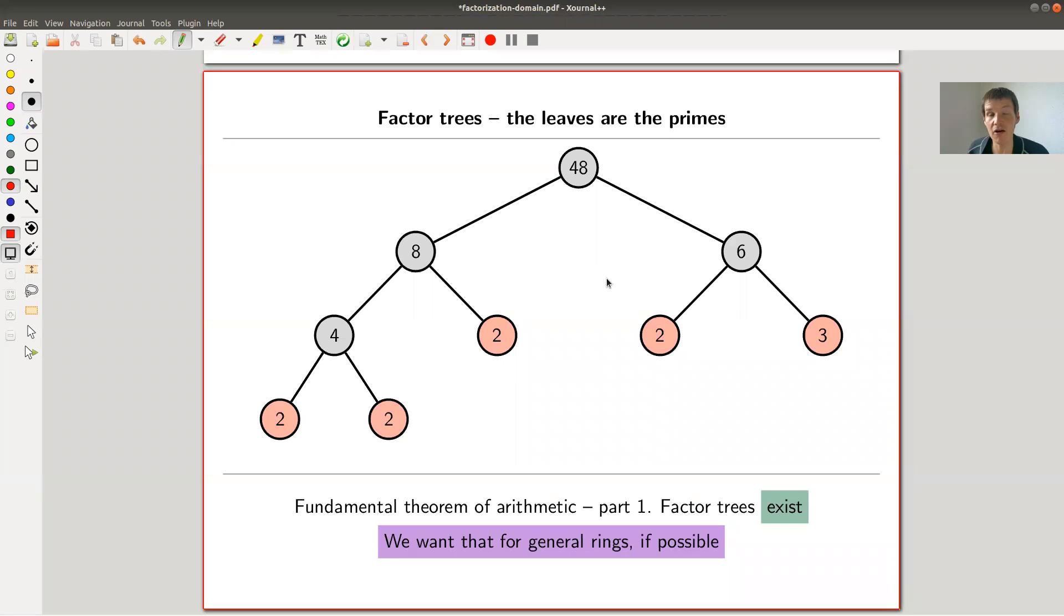So what you see right now is what I would call a factor tree. So you start with some number 48, for example, and in each step of your factor tree, you try to build a tree out of it, you split whatever kind of number you already have into further smaller numbers. So 48 is 8 times 6, for example.